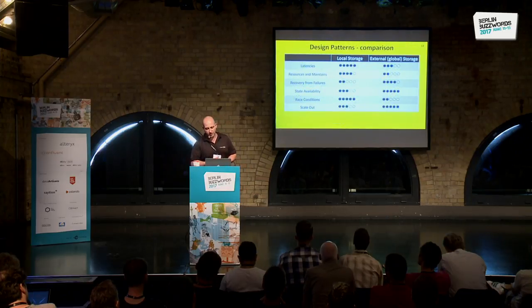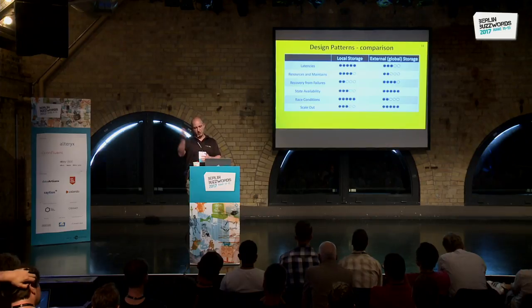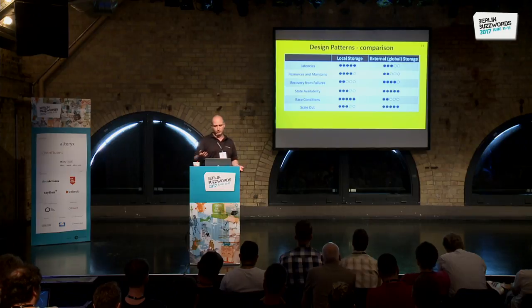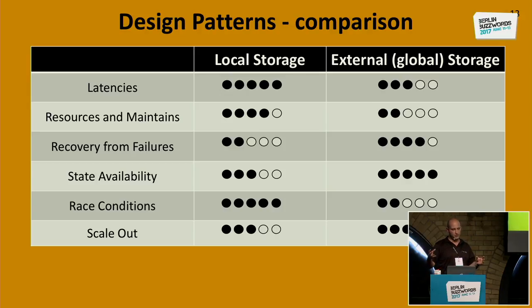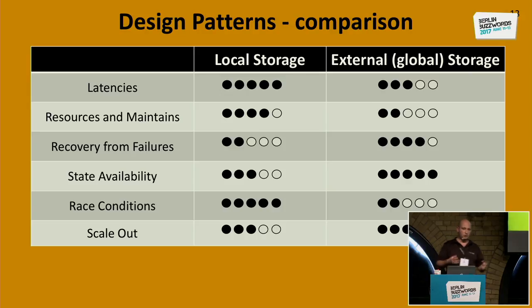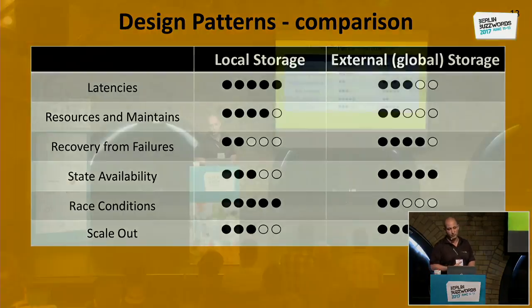Some comparisons: regarding latency, local storage is a much better option because it's in memory or on the file system - we don't have any remote calls over the wire or network bottlenecks typical of databases, so local storage wins there. From a resource and maintenance perspective, maintaining a stream processing system without another piece of distributed database is definitely much easier. But it still doesn't get full marks because managing a distributed stream processing system is not an easy task - you need to monitor, track, and make sure everything works fine. If you add another distributed data storage on top, you need a separate cluster and possibly separate DevOps support.